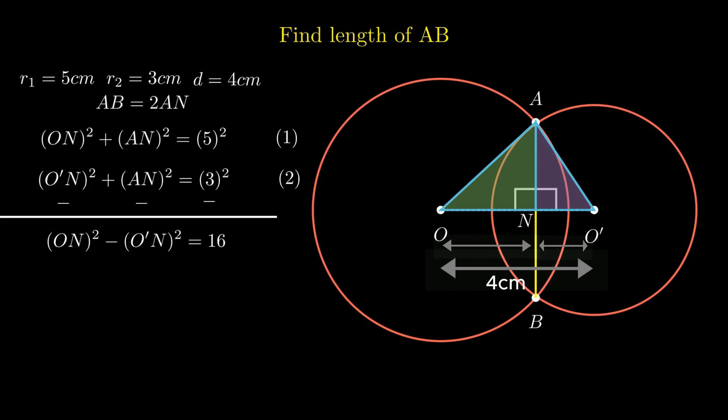So, if we assume segment ON equal X, segment O'N becomes 4 minus X. Now, our equation can be simplified as both segments are expressed in the same variable. But if there would have been no such relationship, then we have to form another equation in same variable as we did it earlier.